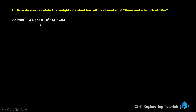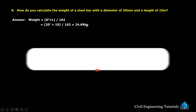For a steel bar with a diameter of 20 mm and length of 10 meters, using the formula D²L ÷ 162: 20² × 10 ÷ 162, we get 24.69 kg as the weight of the steel bar.